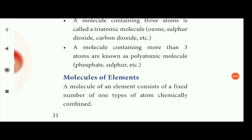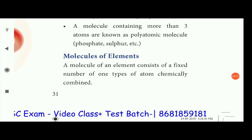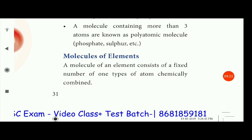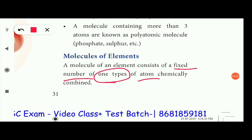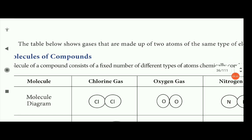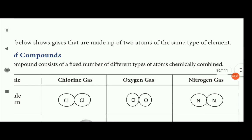Next, molecules of elements: a molecule of an element consists of a fixed number of one type of atom chemically combined — the same type of atoms chemically combined. An example is given in the table below, which shows gases made up of two atoms of the same type of element.